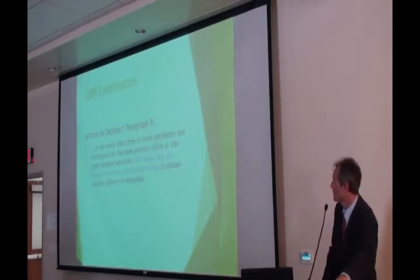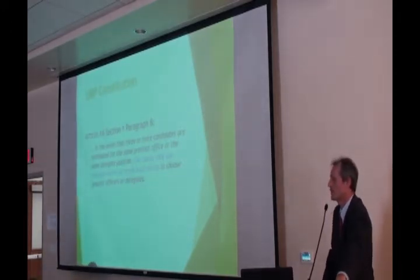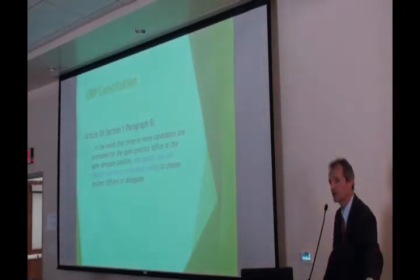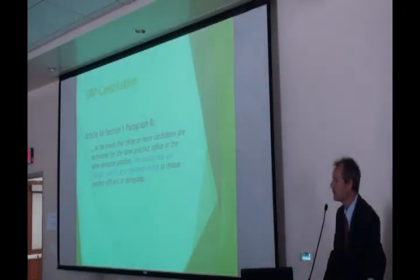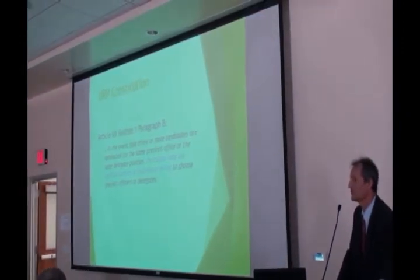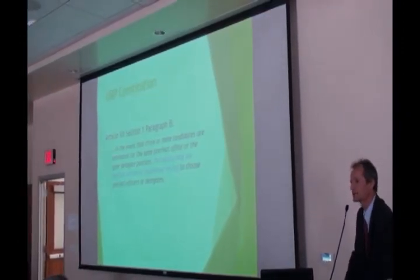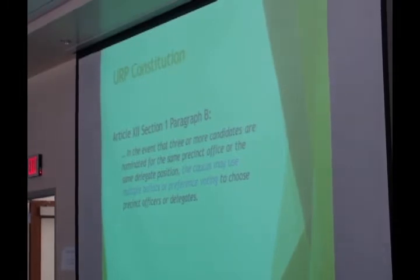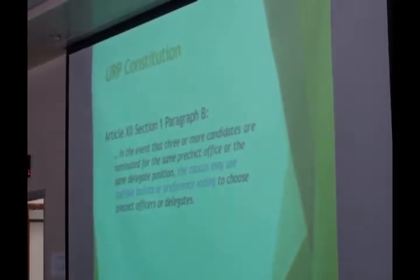Authority for multiple-round voting or preferential voting is found in the State Party Constitution, Article 12, Section 1, Paragraph B. So if you have three or more candidates running in a race, the caucus may decide to use either multiple ballots or preferential voting. That's up to the caucus.